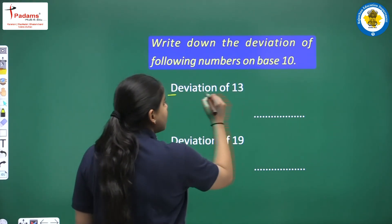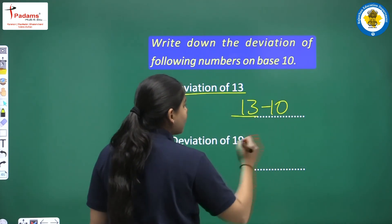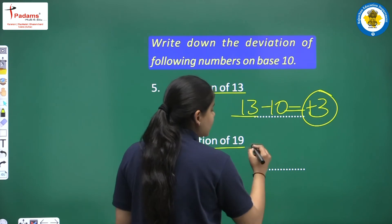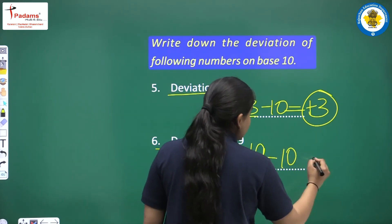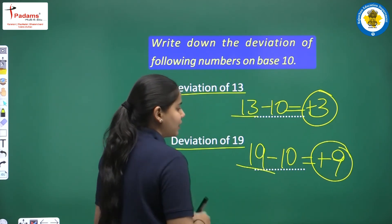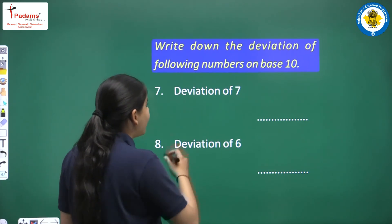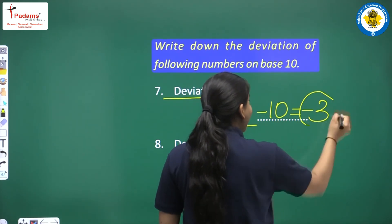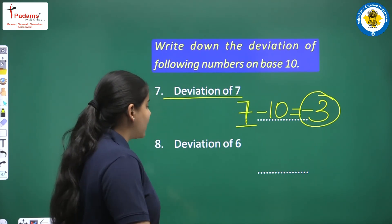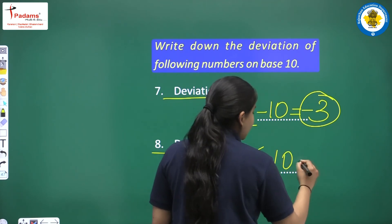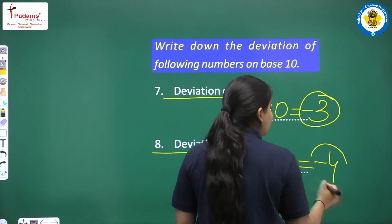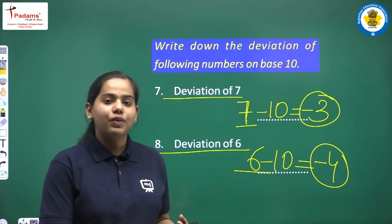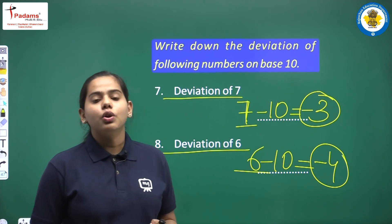Deviation of 13: 13 minus 10 gives us plus 3 — positive deviation. Deviation of 19: 19 minus 10 equals plus 9 — positive deviation. Deviation of 7: 7 minus 10 gives us minus 3 — negative deviation. Deviation of 6: 6 minus 10 gives us minus 4 — negative deviation. In this class, we have practiced concepts related to deviation, Charam Ankh, and also Nikhilam Sutra.